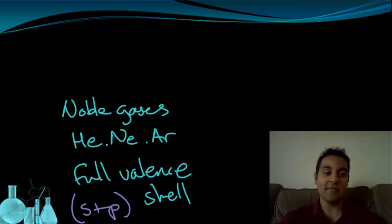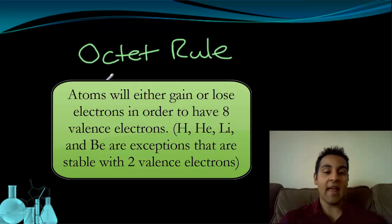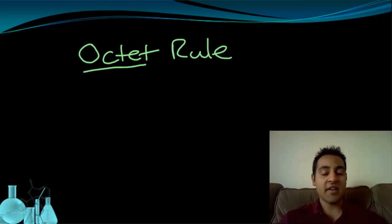And that leads us to something called the Octet Rule. The Octet Rule states that atoms will either gain or lose electrons to have a full valence shell, or to have 8 valence electrons. That's where octet comes from, 8. So let's look at how they can do that. Gaining electrons makes sense. We want to gain electrons until we have 8 valence electrons. But how is losing electrons a strategy for having 8 valence electrons?